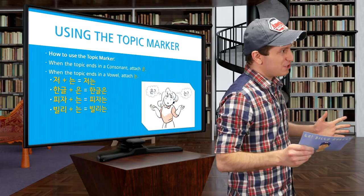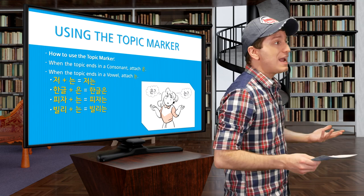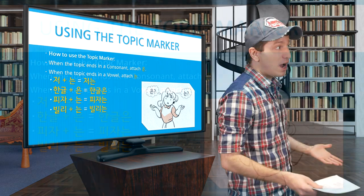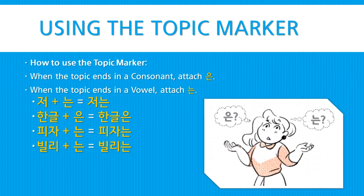So now how do you use the topic marker? Well it's quite easy. It attaches directly to a noun, just like the object marker. If the noun ends in a consonant, you'll attach 은. If the noun however ends in a vowel, you'll attach 는. So that's why 저는 became the way it did. And here are some more examples: 한글은, 비자는, 빌리는.